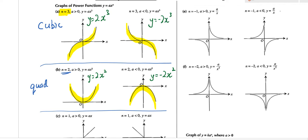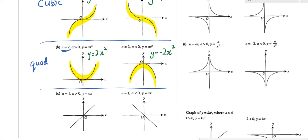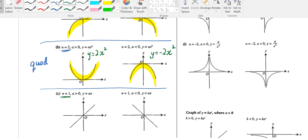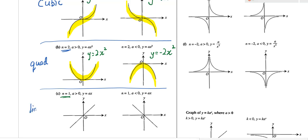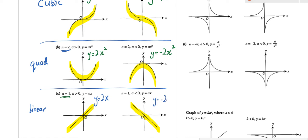With the four graphs as revision, let's look at n equals to one — what kind of graph is this? Linear, right. It's a linear graph, and linear means it's going to be a straight line. It's either sloping up if 'a' is positive, or sloping down if 'a' is negative. So the equation can be y equals 2x or y equals negative 2x.